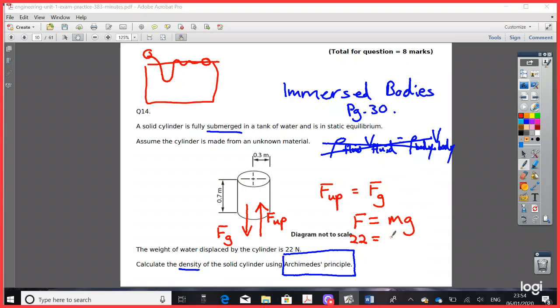So if we know the weight of the water, force is 22, then the mass of the water can be worked out by using, by doing so, because we know g is 9.81. So mass of the water is 22 divided by 9.81.